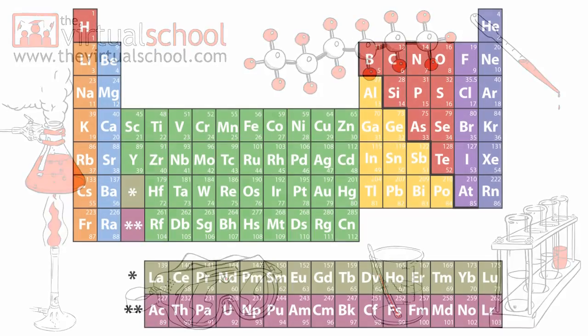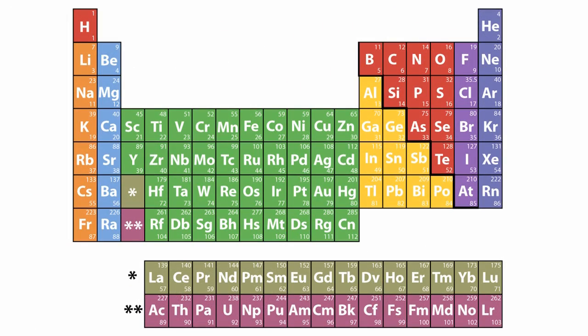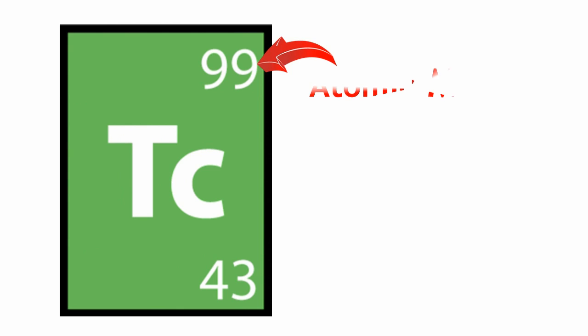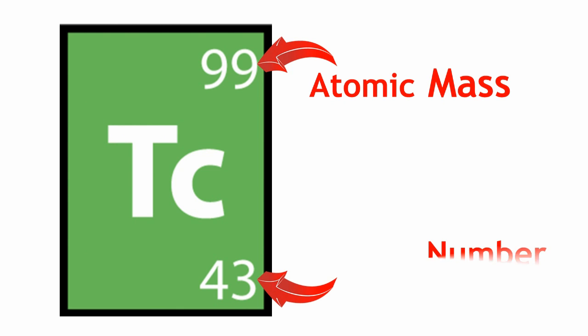The modern periodic table is based on Mendeleev's arrangement, but instead of being arranged by atomic mass, as Mendeleev's was, it is arranged by element's atomic number.